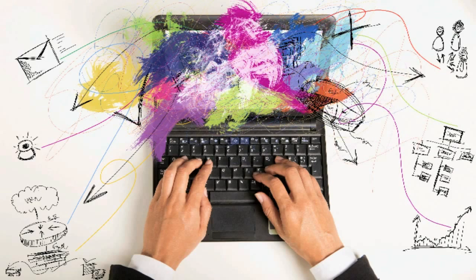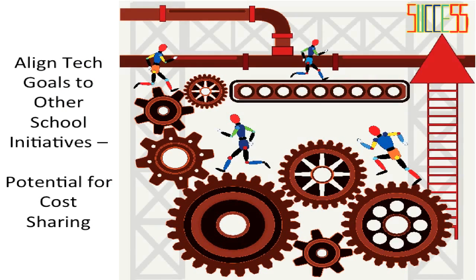Ultimately, when exploring budgeting options, it is important to be creative, engage numerous stakeholders, and develop a multi-year plan for financing technology needs. Review your existing operating budget and consider how your current budget can be altered to support ongoing implementation efforts. By aligning technology implementation goals with goals of other school-wide initiatives, you will be able to integrate the costs of technology to support other program goals.